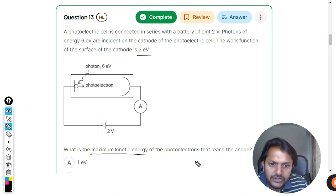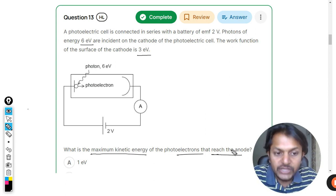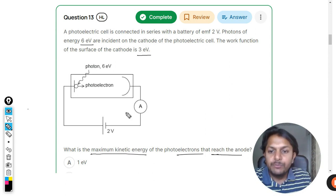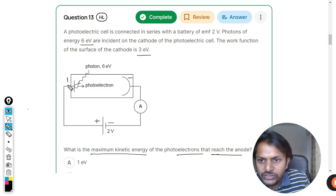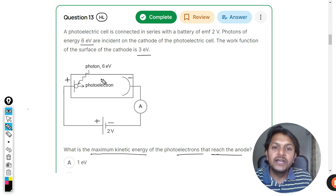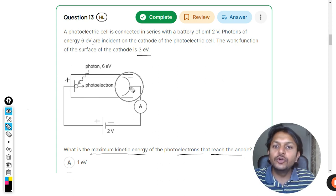What is the maximum kinetic energy of the photoelectrons that reach the anode? There is a stopping potential attached here. You can see this end is negative, this end is positive. That's why they're calling it cathode and anode—cathode is positive, anode is negative.